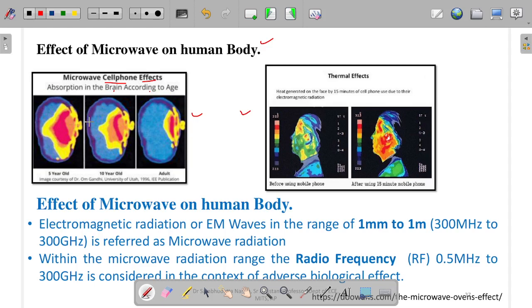First of all, you see the red area is the affected area of our brain when exposed to microwave signals used in mobile phones. A 5-year-old child's brain is very heavily affected, a 10-year-old's brain is less affected, and an adult's brain is minimally affected.